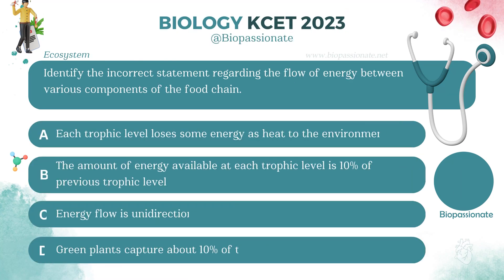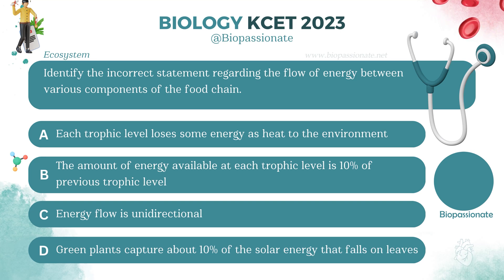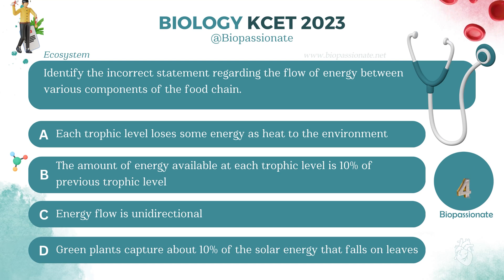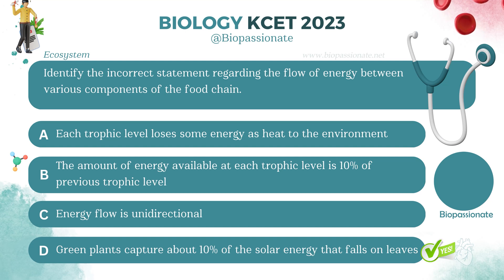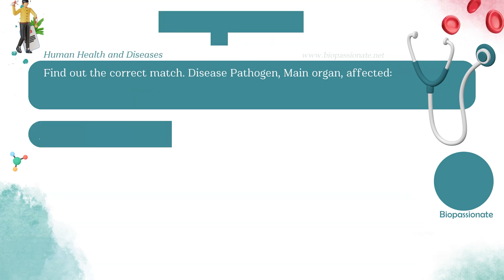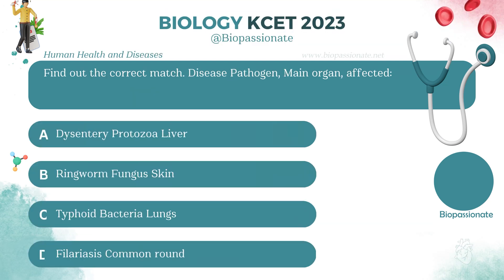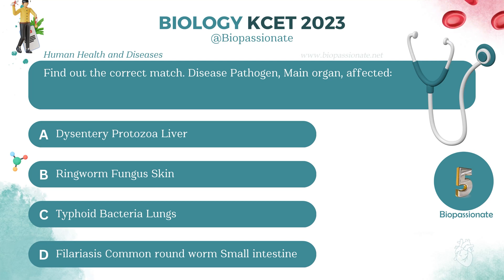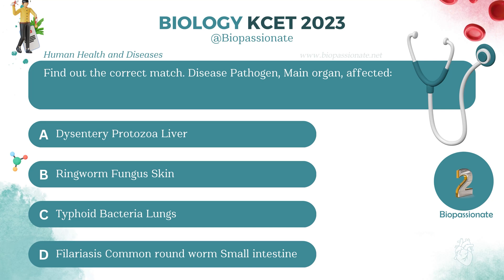Identify the incorrect statement regarding the flow of energy between various components of the food chain. Answer: Option D.